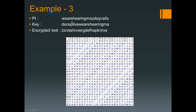In the last example, the plain text is 'we are hearing mayday calls' and the key is 'deceptive', making the intermediate text 'deceptive we are hearing ma'. For the first character: 'w' from the plain text and 'd' from the key — find 'w' row-wise and 'd' column-wise — we get 'z'. For the second-to-last character: 'l' from the plain text and 'm' from the key — l is here, m is here — we get 'x'. For the last character: 's' and 'a' — row-wise 's' is here and column-wise 'a' is first — giving 's'. That is how you encrypt any plain text using the auto key cipher.